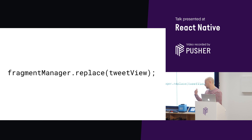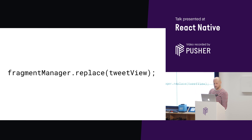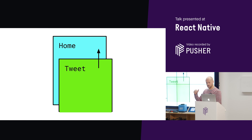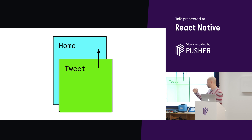That line of code isn't 100% correct — it's pseudocode to keep the sample short and understandable. Once we replace the home screen with the tweet screen by calling replace on the fragment manager, Android takes care of the rest. It animates the new tweet screen in over the top of the home screen, sliding the tweet screen up from the bottom of the screen.